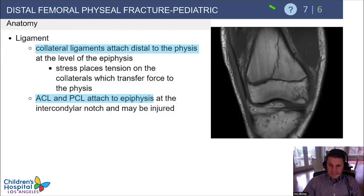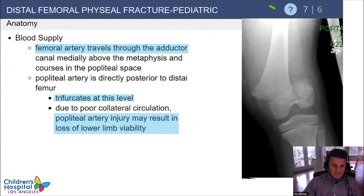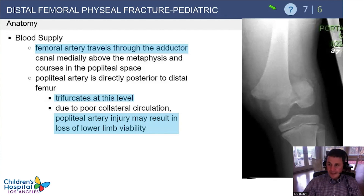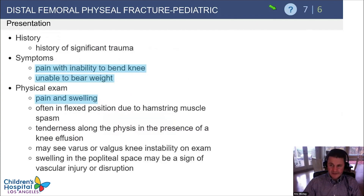The collateral ligaments attach just distal to the physis, so the physis is often weaker and stress transfers from the collaterals to the physis — causing the physis to break. Remember the blood supply: the femoral artery passes through the adductor canal into the popliteal artery just posterior to the distal femur, so injury to the popliteal artery can result in loss of lower limb viability.